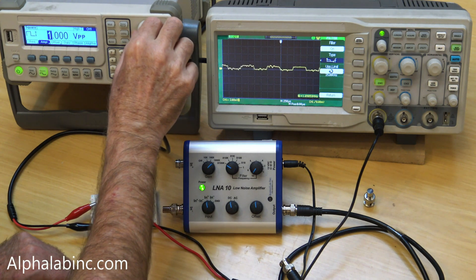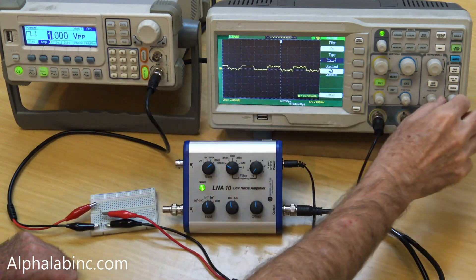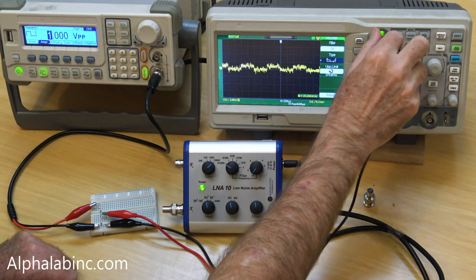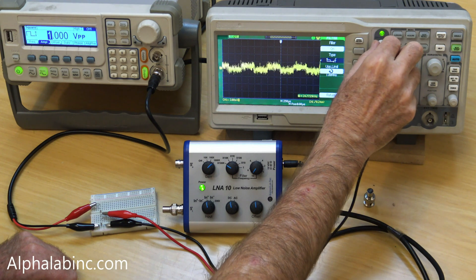Reducing the signal down to 1 millivolt peak to peak, it's becoming difficult to resolve the square wave, especially if the bandwidth is increased back up to 1 megahertz.